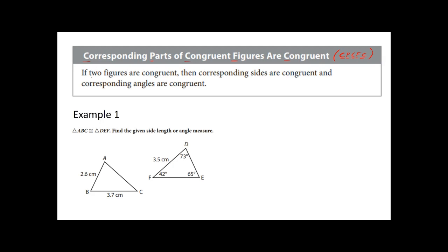Now, it basically just says if two figures are congruent, if they are congruent, then corresponding sides are congruent and corresponding angles are congruent. So that means, to sum it all up, the sides are going to be the same to their corresponding sides, and the angles are going to be the same for their corresponding angles.